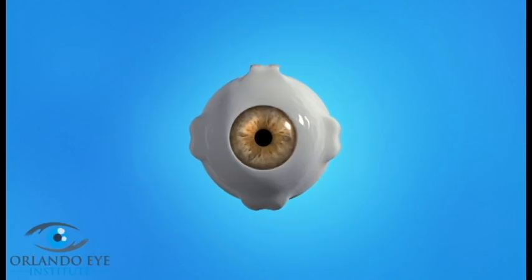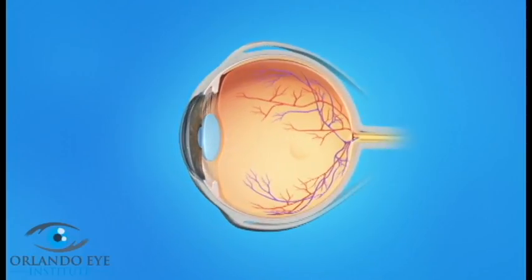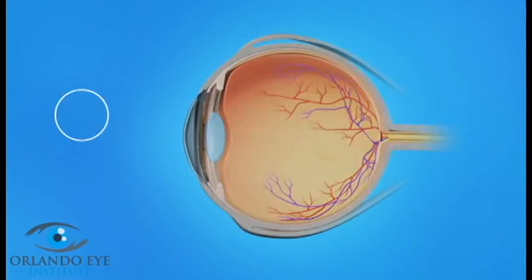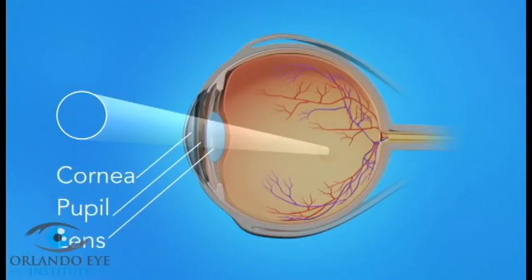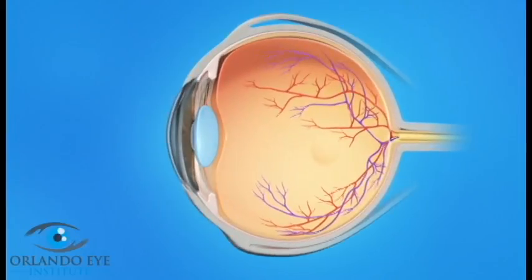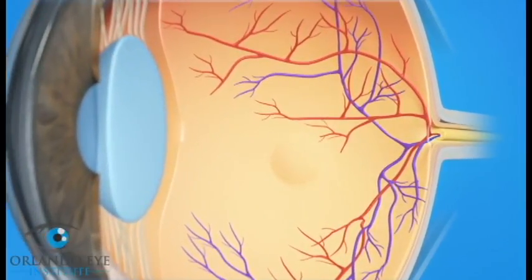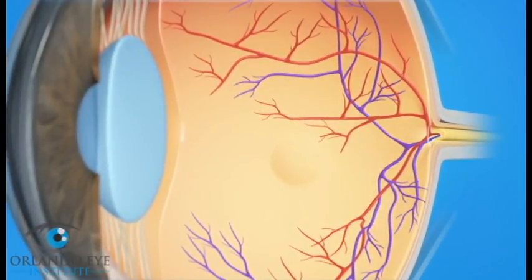Let's take a look at how diabetes affects the eye. Light rays enter the eye through the cornea, pupil, and lens. These light rays are focused on the retina, the light-sensitive tissue lining the back of the eye. The retina sends signals through the optic nerve to the brain, where these signals become the images we see.